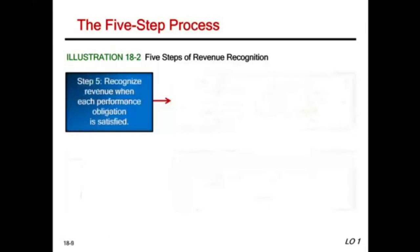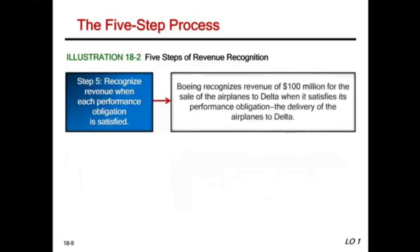Step four — allocate the price to the separate performance obligation: we have only one obligation, to deliver the airplane, so the full $100 million is allocated there. Step five — recognize revenue: recognize $100 million when you satisfy the performance obligation. In this example, that means delivery — deliver the airplanes and the performance obligation is satisfied. Sometimes you might have to recognize revenue throughout a process; each contract will be different.